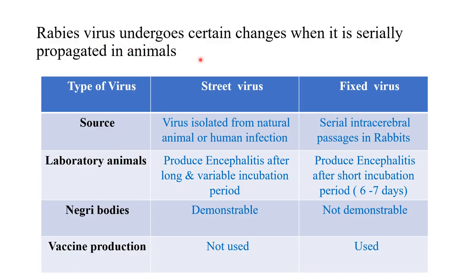Rabies virus undergoes certain changes when serially propagated in animals. We have two types: street virus and fixed virus. Street viruses are freshly isolated strains in the laboratory. When propagated in rabbits by serial brain-to-brain passage, they lose certain properties — for example, Negri bodies will not be demonstrable in these fixed viruses.